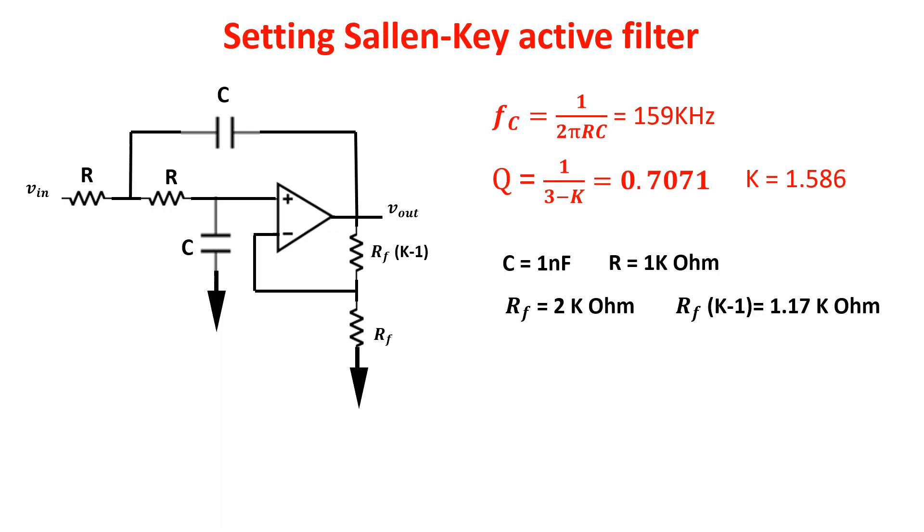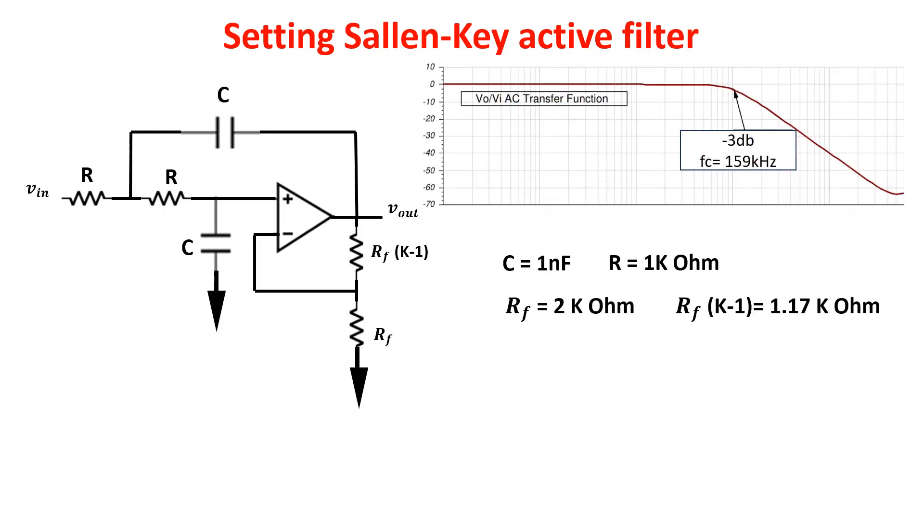The frequency response of this filter is this where you see the cutoff frequency at 159 kHz, the flatness of the passband and the slope at 40 dB per decade in the stopband.